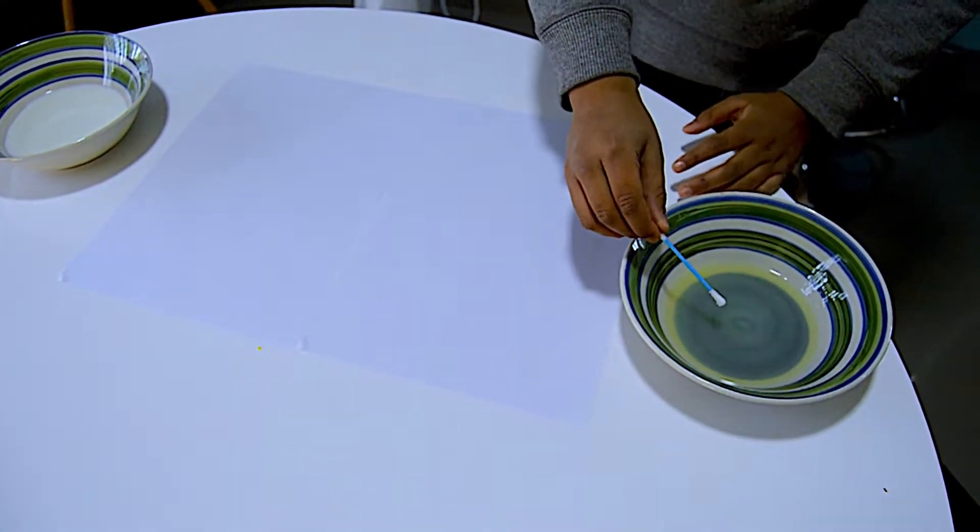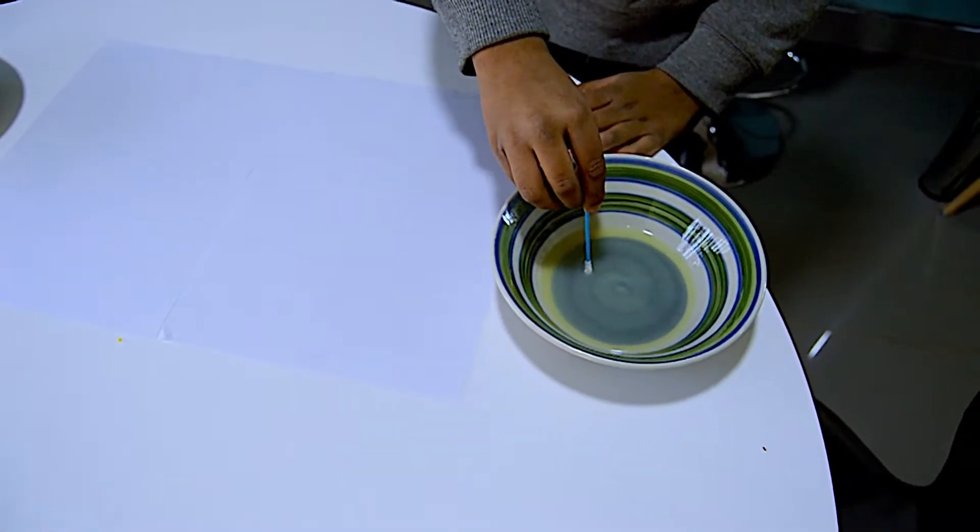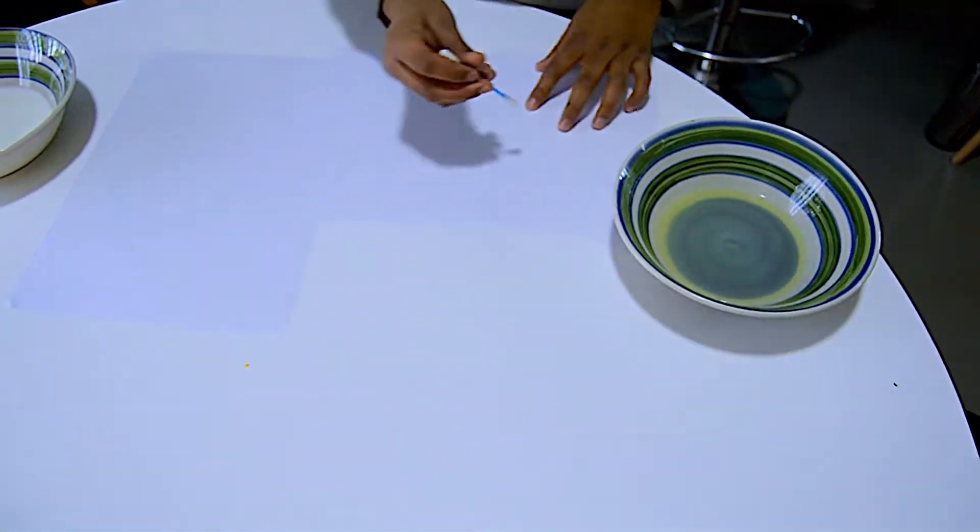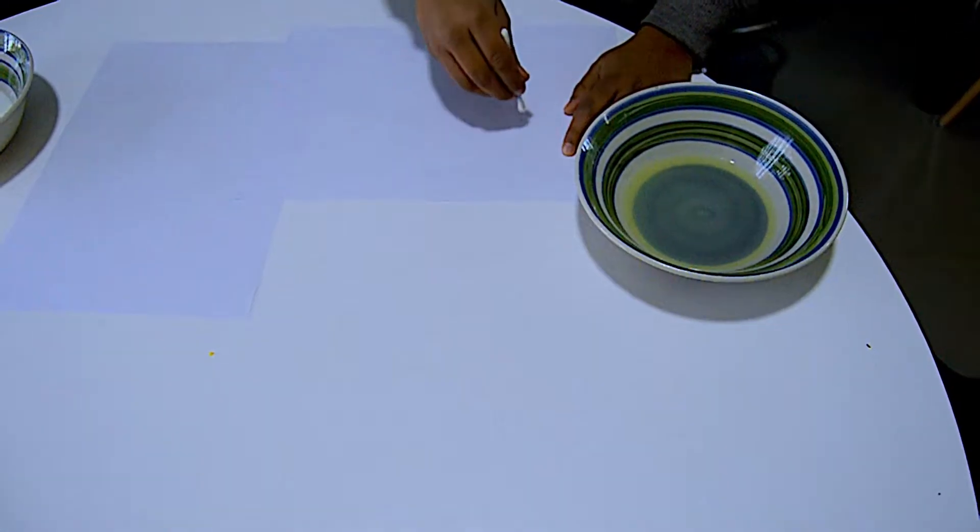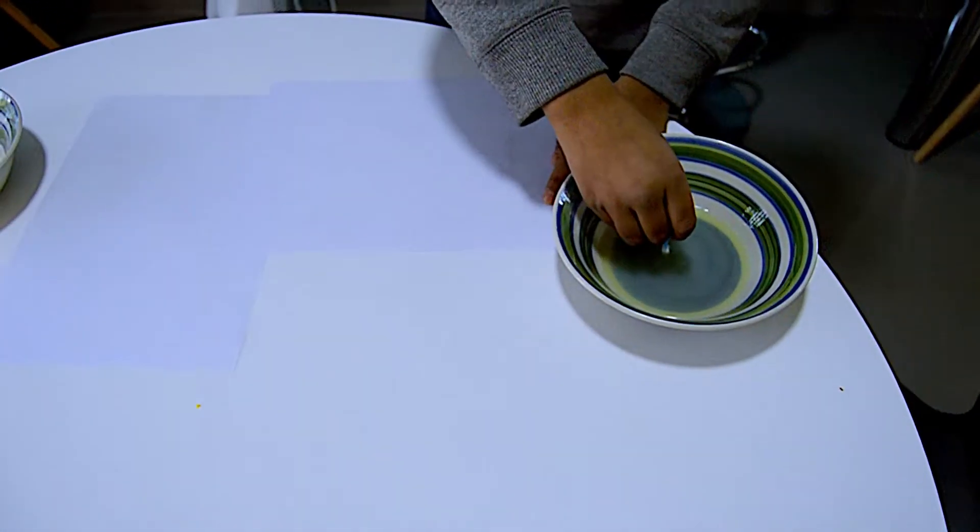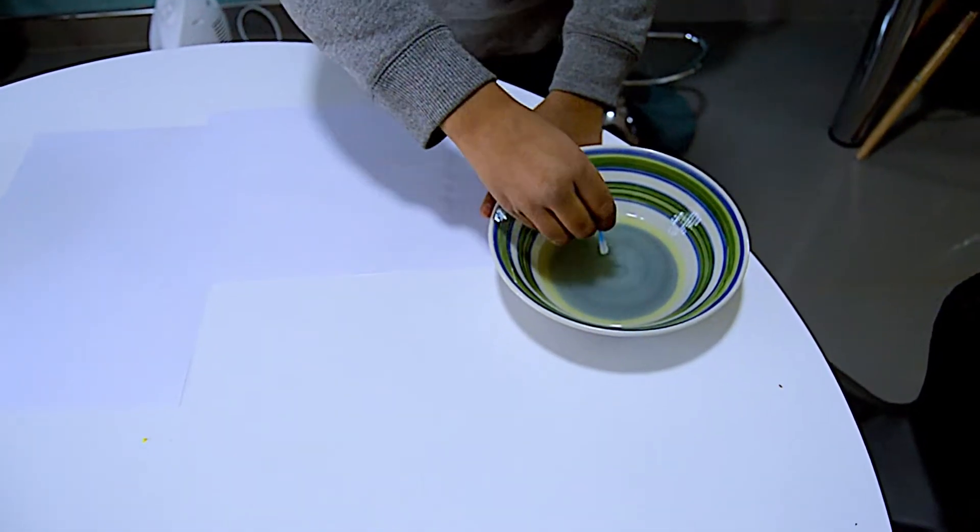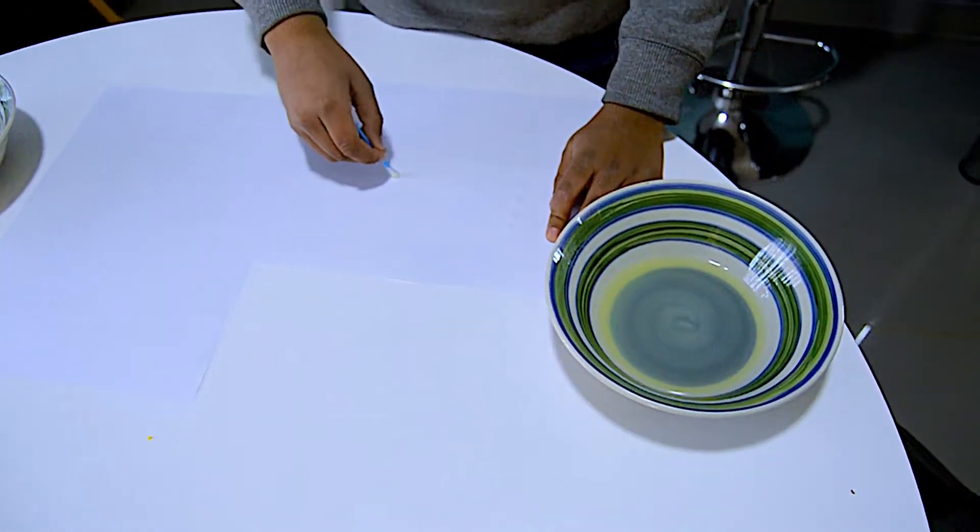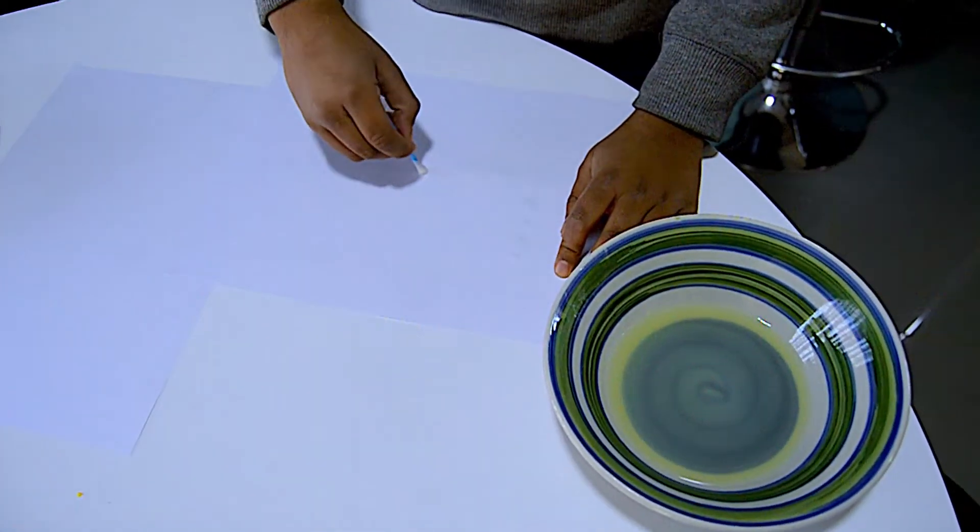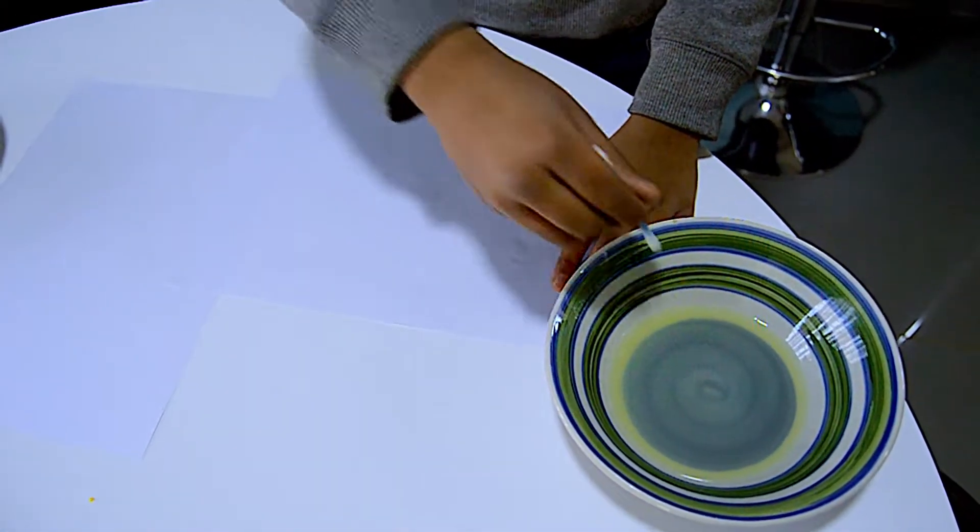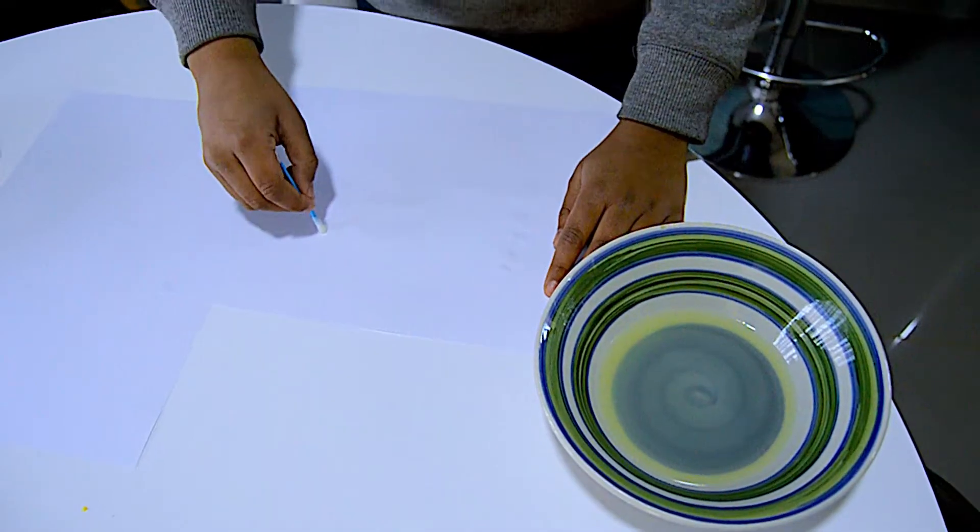First you are going to take your cotton bud and dab it in your lemon juice and you're going to write anything on the paper. But what you're going to do when you're writing is you're going to keep on dabbing it in so you don't lose ink. So I'm just going to write, I'm just writing the first, you'll see actually.